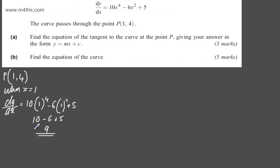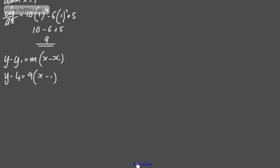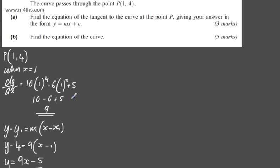So we've got a gradient and a point that it passes through. I'm going to substitute this into the equation of a straight line. I'm using y - y₁ = m(x - x₁). You can of course use y = mx + c. So y - 4 = 9(x - 1). Expanding the brackets and adding 4 to both sides gives 9x - 9 + 4, so y = 9x - 5. That's the equation of our tangent in the form y = mx + c.